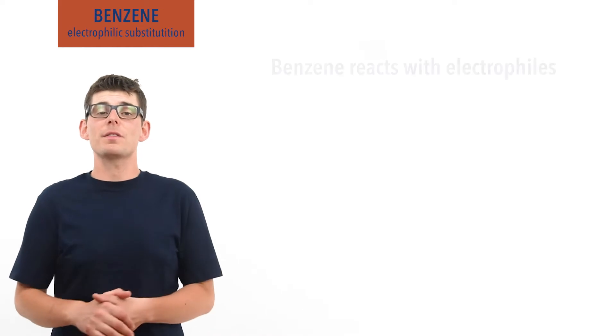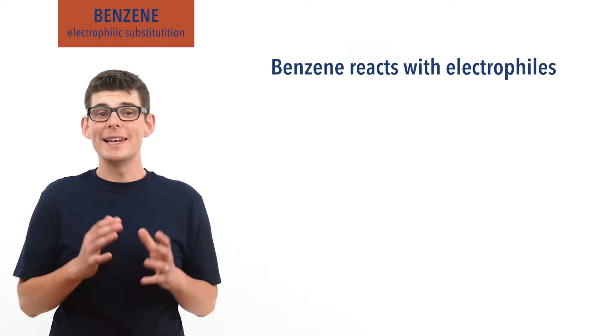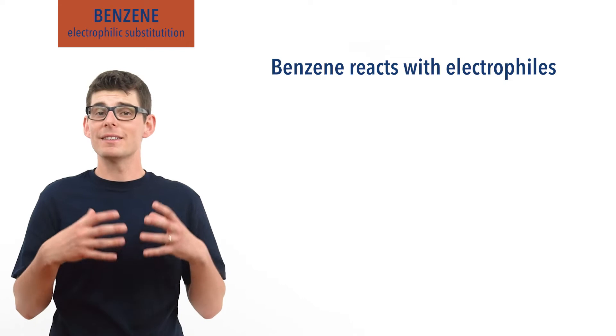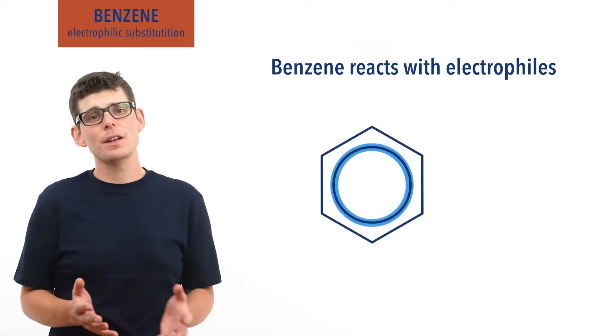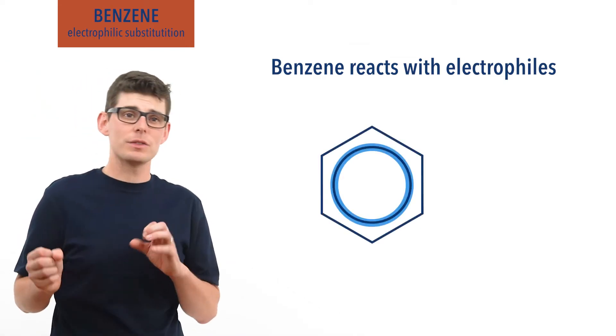Recap done, let's go! Benzene reacts with electrophiles and it's vulnerable to electrophilic attack. This is because it has a pi bonding system and delocalized electrons that electrophiles are attracted to.